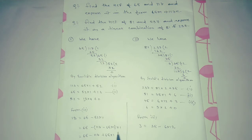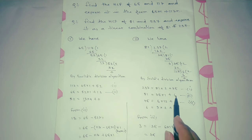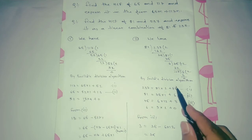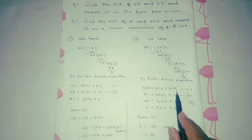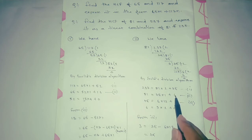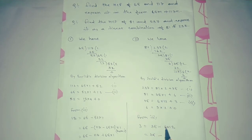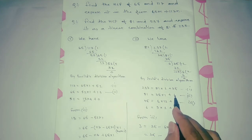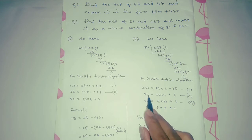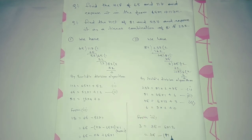Our target now is to replace the remainder 6. Looking at equation two, 6 is a remainder. We can write 6 = 81 − 75 × 1. So instead of 6, we substitute 81 − 75 × 1, keeping the outside factor of 12.